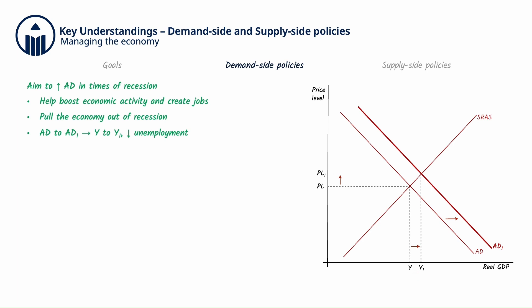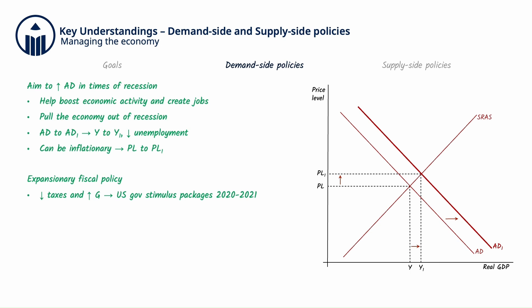However, expansionary policies can be inflationary as they increase the price level, as seen from PL to PL1 on the diagram. Expansionary fiscal policy involves decreasing taxes and increasing government expenditure (G), such as the US government stimulus packages during the 2020 to 2021 COVID-19 pandemic. This is because decreasing taxes will lead to higher disposable incomes and thus increase the C and I components of AD, and increasing G will also directly increase AD.